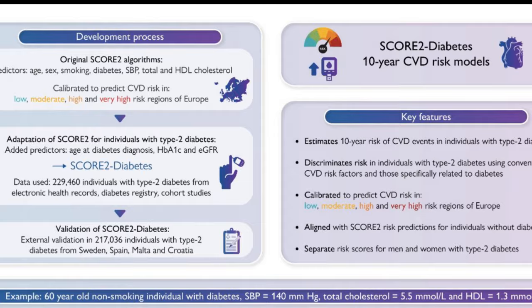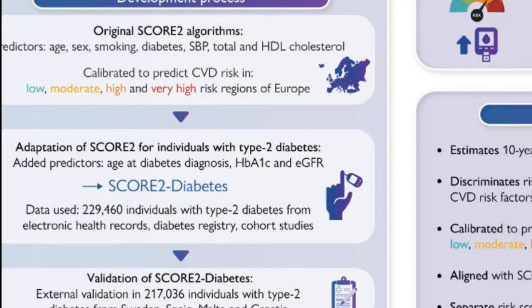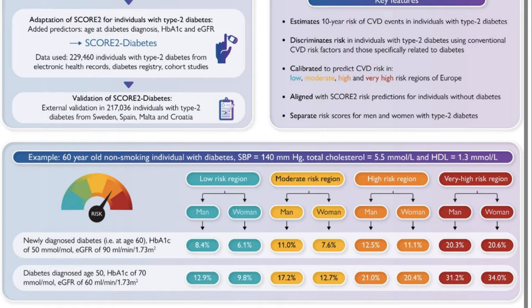Recently, the European Society of Cardiology developed the SCORE2-Diabetes charts, which can be used in patients more than 40 years of age with type 2 diabetes who do not have atherosclerotic cardiovascular disease or severe target organ damage, to estimate the 10-year risk of cardiovascular disease.